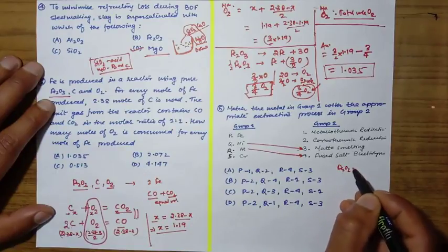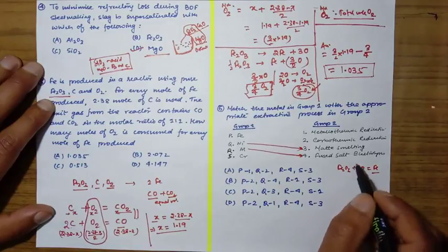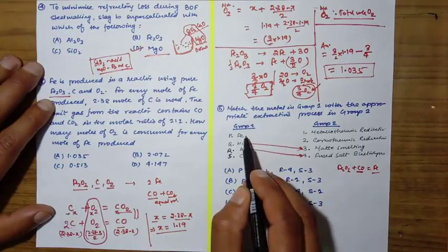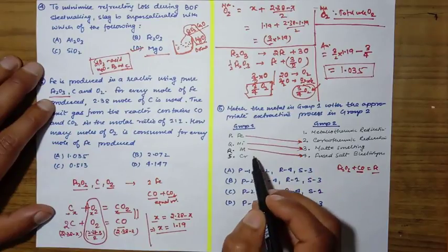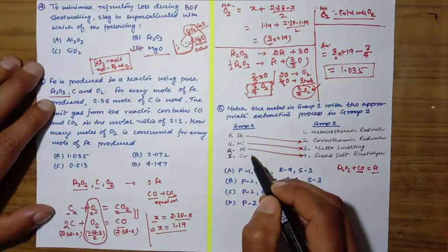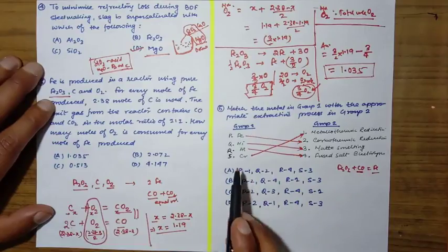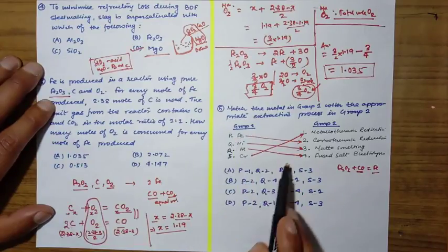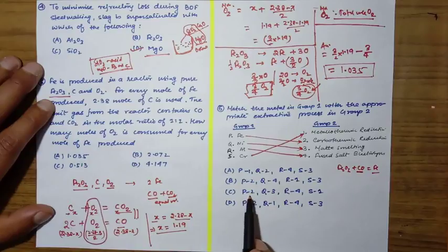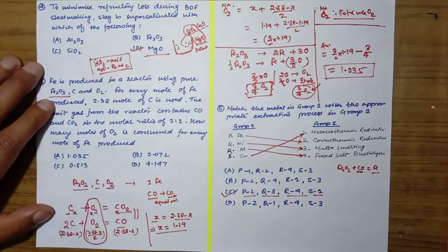Iron - we know Fe2O3 is reduced with CO to give iron, so it's carbothermal reduction. The remaining one is chromium, which is reduced with metallothermic reduction. If you see the options, P-2, Q-3, R-4, and S-1, this is the correct answer. Thank you all.